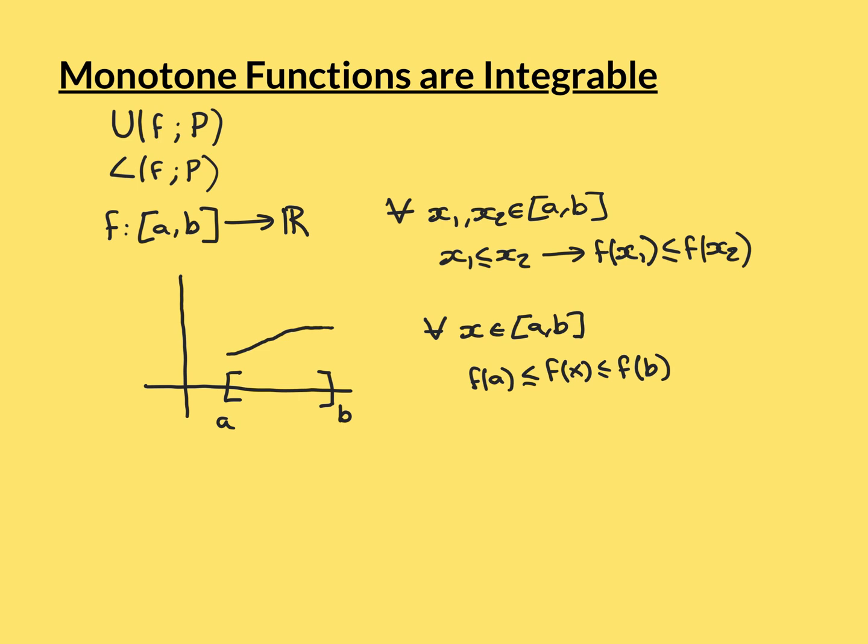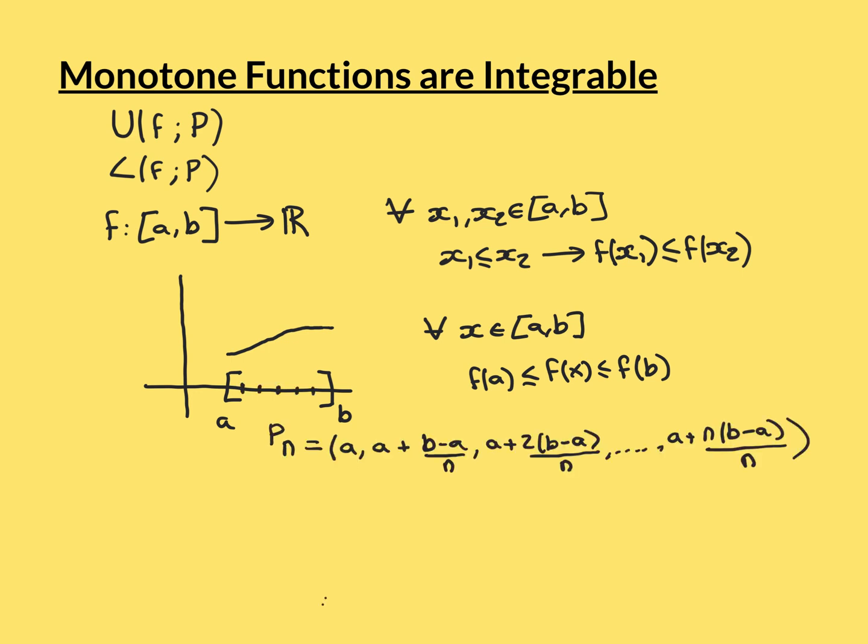So the proof now: we have our monotonically increasing function on this closed bounded interval, and we want to show that it's always Riemann integrable by showing that it obeys the Riemann integrability criterion. We want to show that by picking better and better partitions, we can make the difference between the upper and lower Riemann sums indefinitely small.